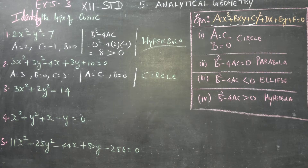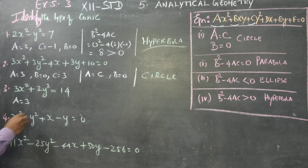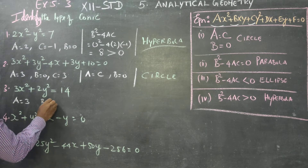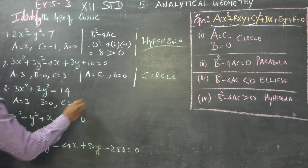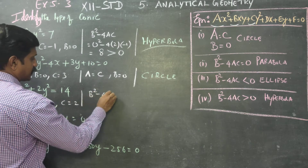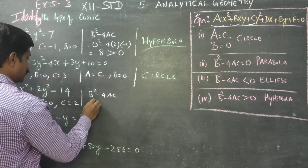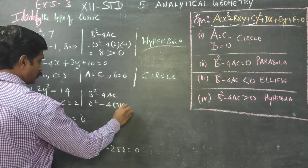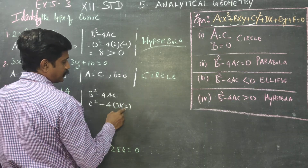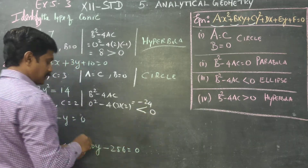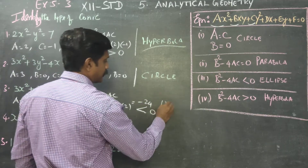Coming to sum number 3: my a is 3. There is no xy term, so b equals 0. The y squared term gives c equals 2. I am going to find b squared minus 4ac: 0 squared minus 4 into 3 into 2 equals minus 24. Since minus 24 is less than 0, the answer is an ellipse.